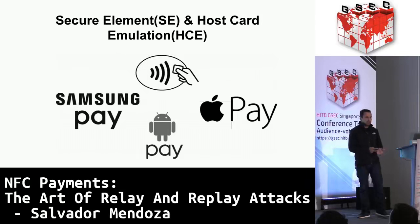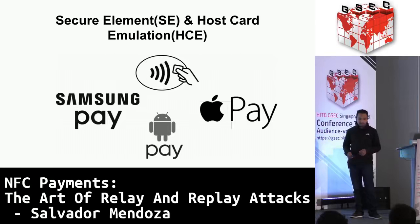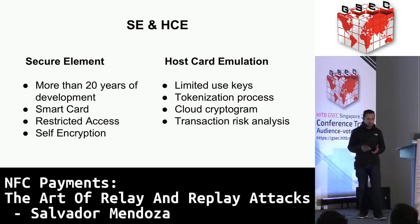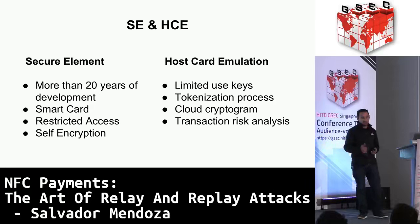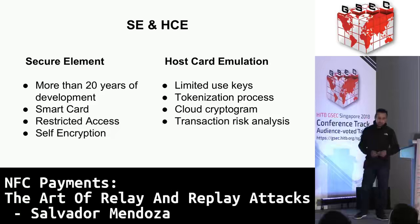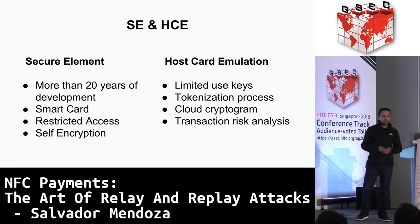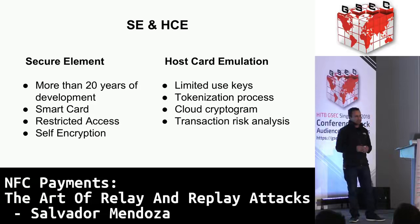We have two technologies for mobile devices: Secure Element for Samsung Pay and Apple Pay, and Host Card Emulation for Google Pay. Secure Element has been developed for more than 20 years - it's a smart card with restricted access and self-encryption. When making a transaction, the terminal sends a challenge to the Secure Element, and it mathematically calculates and sends back the cryptogram and application transaction counter. On the other side, Host Card Emulation implements Google Pay, using limited-use keys for tokenization, cloud cryptograms, and transaction risk analysis. When you add a card to Google Pay, it downloads four or five tokens which are virtual credit cards. When those run out, it downloads another four or five tokens.